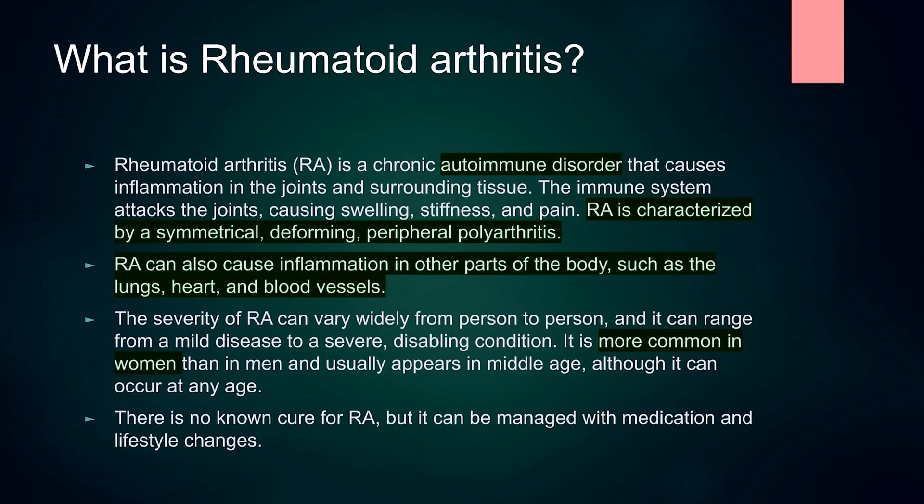In the heart, it causes amyloid cardiomyopathy, which is a form of restrictive cardiomyopathy. It also causes pericarditis. Finally, for the blood vessels, it may cause different types of vasculitis.